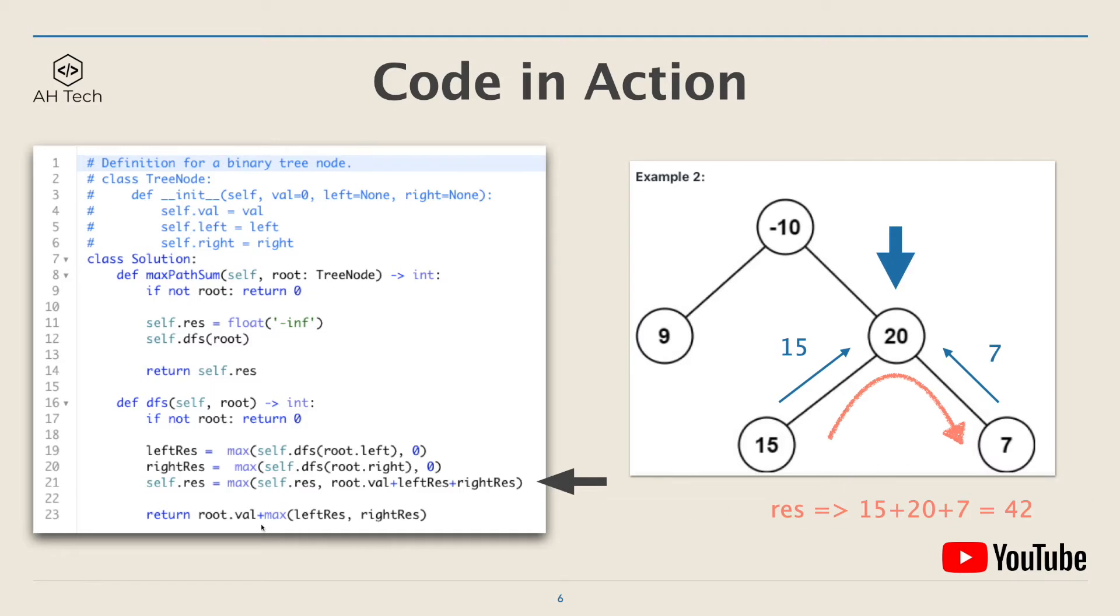And next we will return from the DFS function, but we have to return root.value plus the maximum of left result and right result. Because if you remember, the key condition in this question is a node can only appear in the sequence of the path at most once. So if we return both left and right subtree, then the root will appear in a path twice, which is not allowed. So we have to return an optimal path, which is the maximum of the left or right subtree values. And at the end, the maximum path sum we can get in this binary tree is a path in the right subtree: 15 plus 20 plus 7, which is 42. And this will conclude the algorithm.